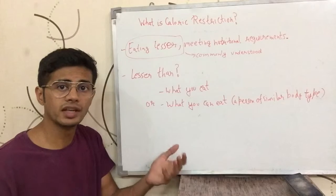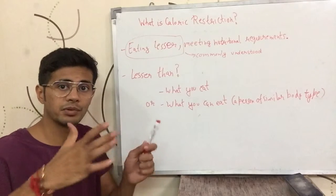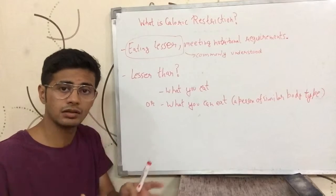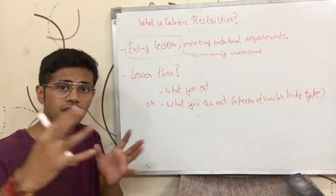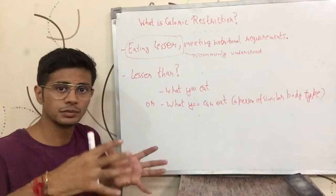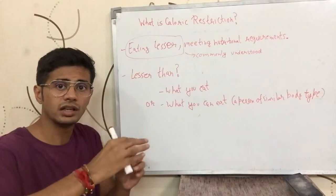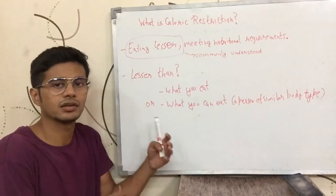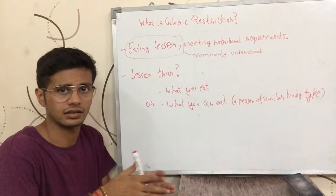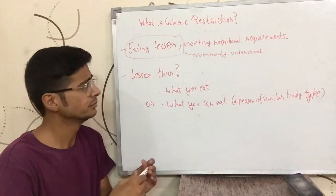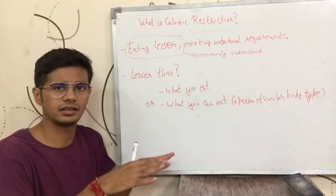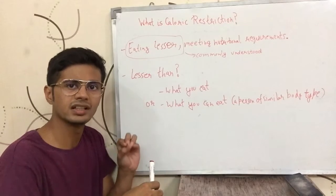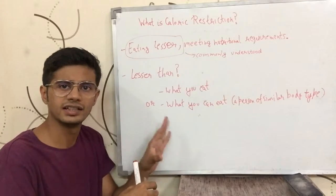You can also take the reference from a person of your similar body type — same height, same weight, similar muscle mass, similar BMR, similar body type. If you see how much that person can eat and you are eating lesser than that, that can also be taken as eating lesser in one sense. Basically, eating lesser than what you were eating or what you can eat — you can understand it that way as a layman.